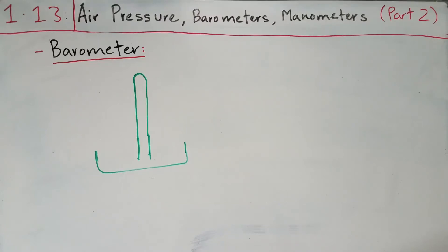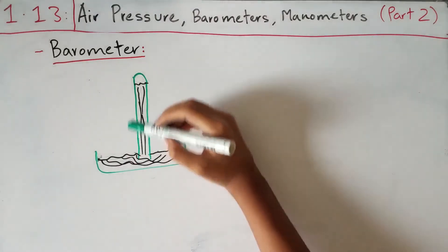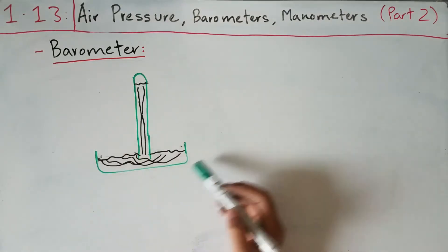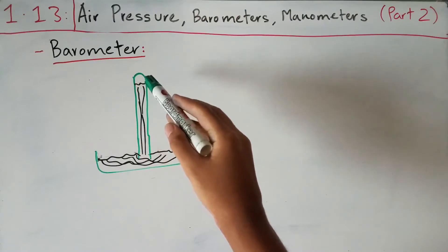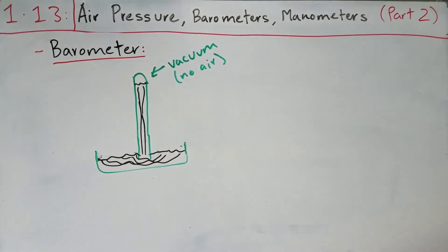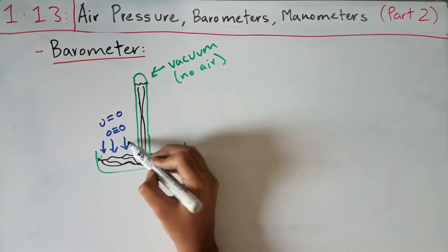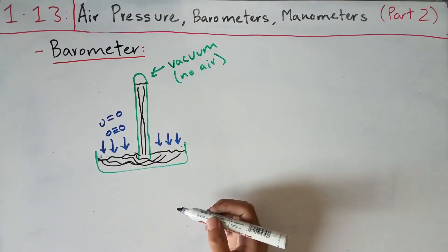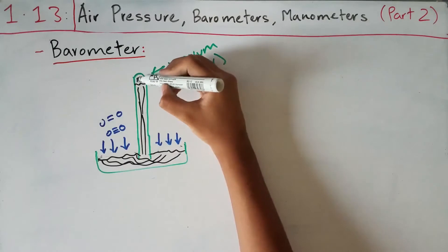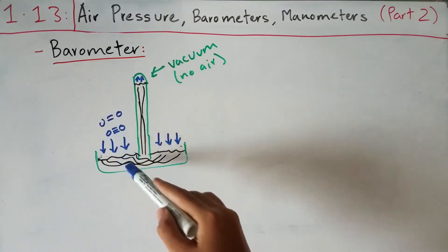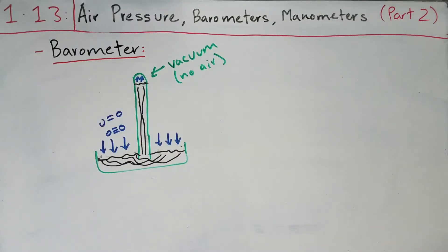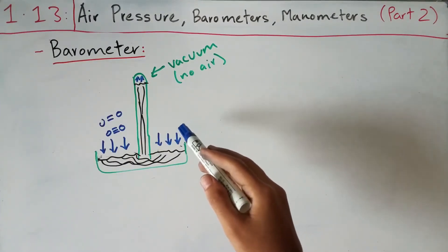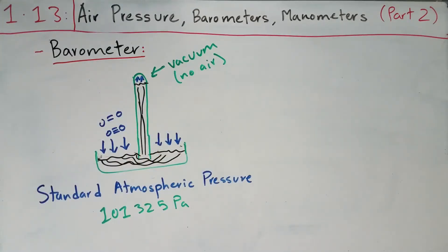To measure air pressure there's a specific instrument called the barometer. A barometer consists of an inverted tube placed upright in a trough filled with mercury. The closed top end of the tube is a vacuum — no air — while the rest of the tube and the dish are filled with mercury. Atmospheric pressure pushes down on the open surface of the mercury in the dish, which pushes mercury up into the tube.